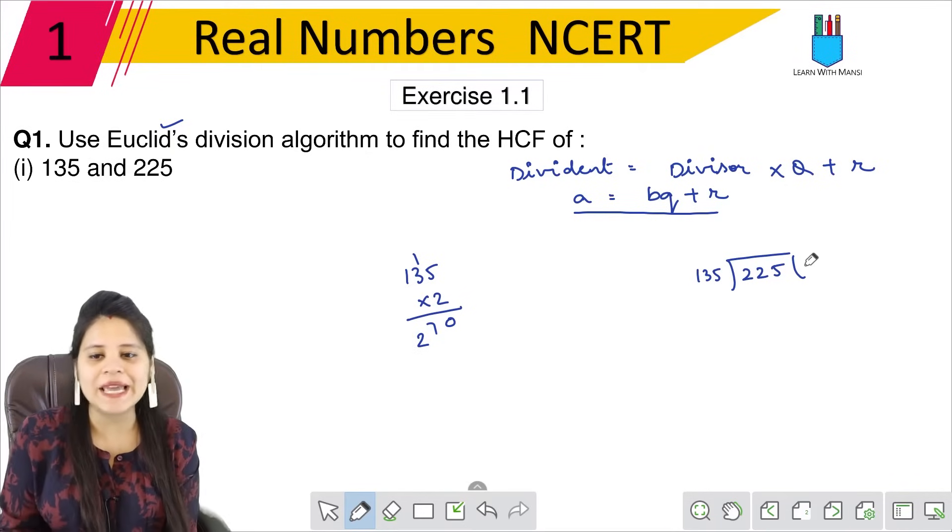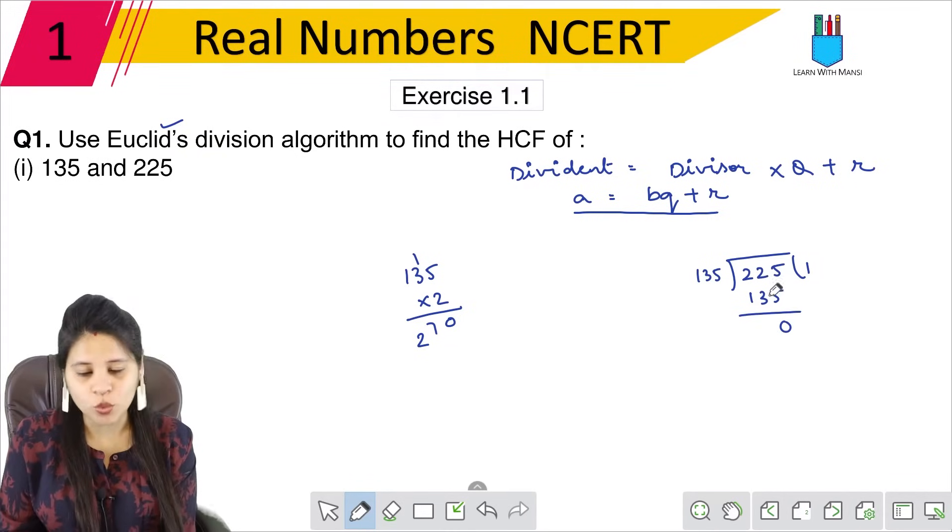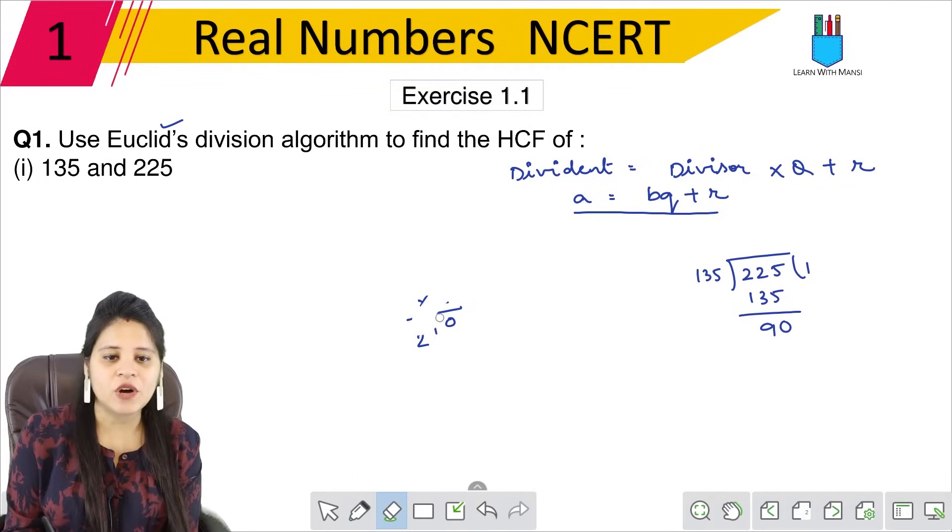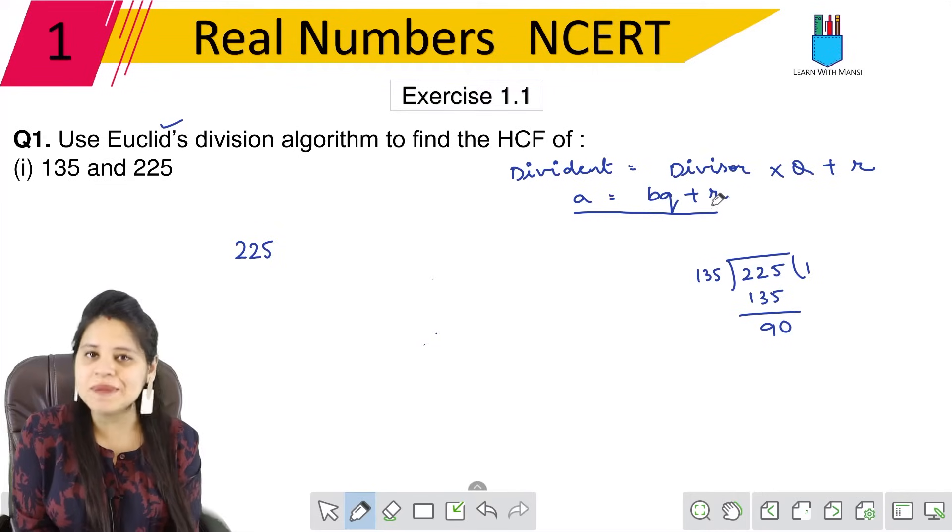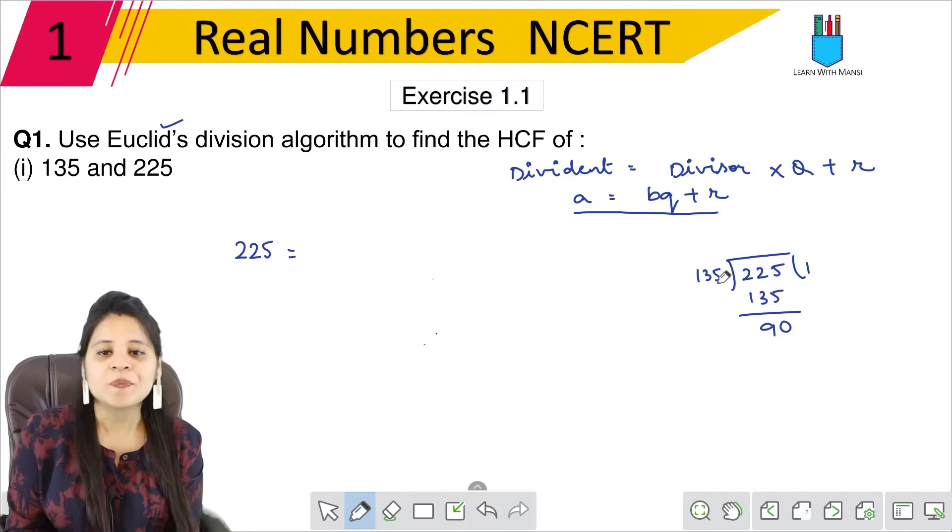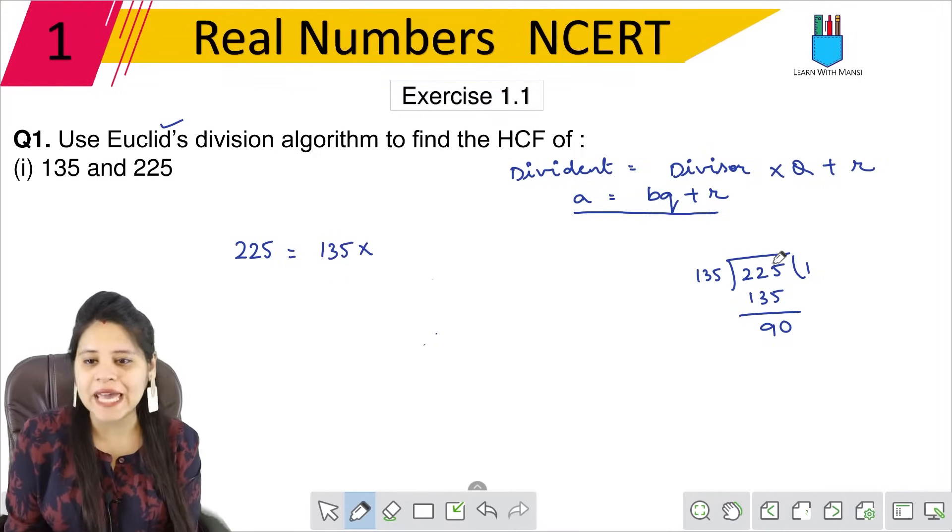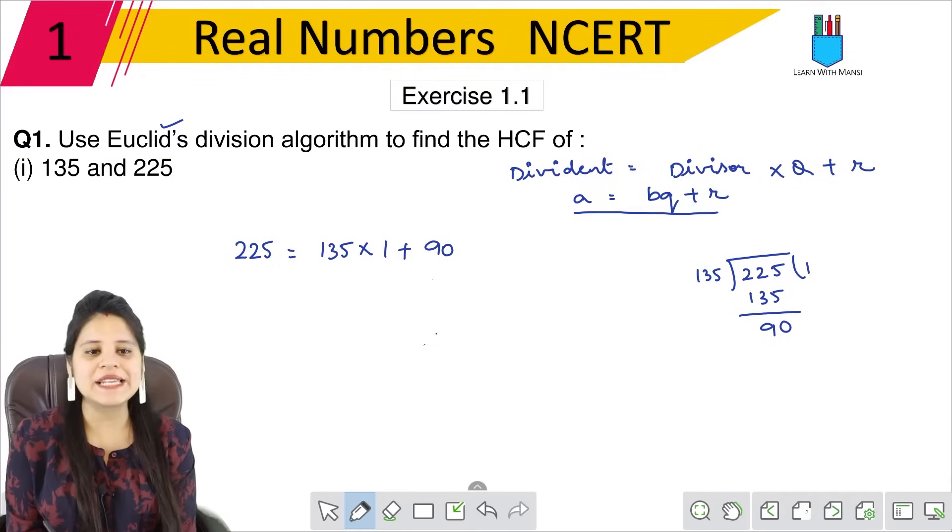Let's see, 135 into 2 is too much. So 135 into 1 is 135. Let's see what remains. 5 from 5 is 0, and then this will become 12, so we have 90 left. Now we will write it as 225 equals to 135 into 1 plus 90.